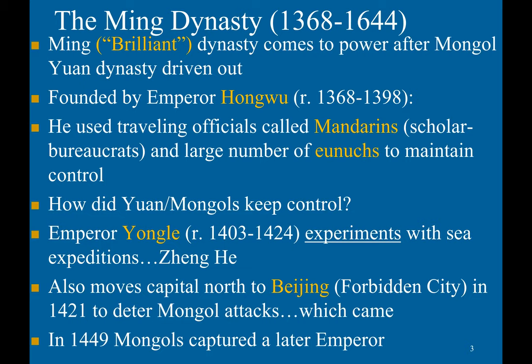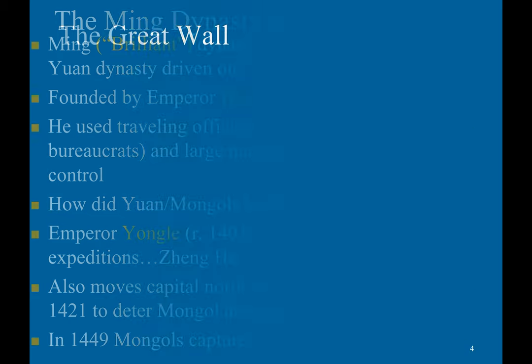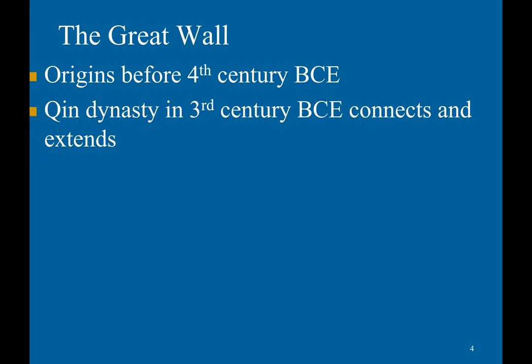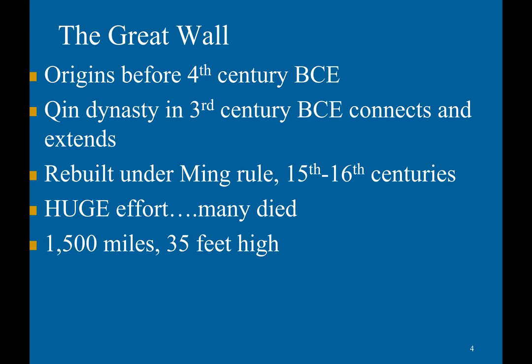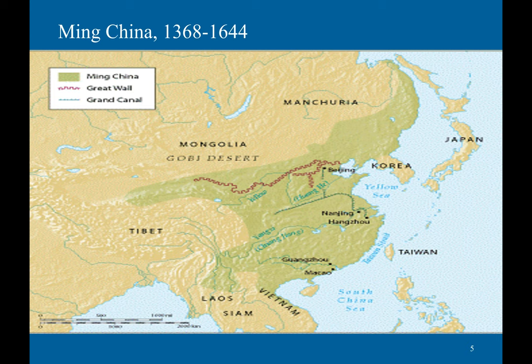In 1449, Mongols captured a later emperor. The Great Wall originated before the 4th century BCE, with the Qin dynasty in the 3rd century BCE connecting and extending it. It was rebuilt under Ming rule from the 15th to 16th centuries — an enormous effort with many workers killed in the process. The wall stretched literally 1,500 miles and stood 45 feet high.